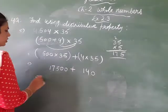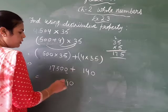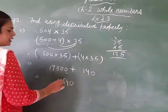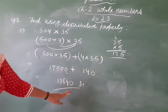And we add them. 1s place, 0. 10s place, 0 plus 4, 4. 100s place, 5 plus 1, 6, and then 17. So, this is our answer, 17,640.